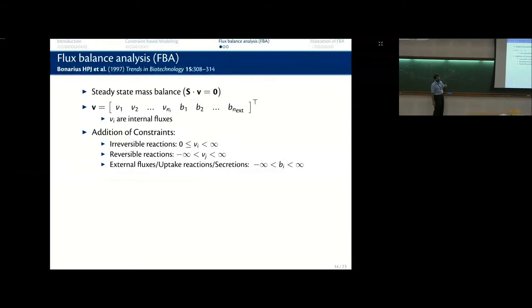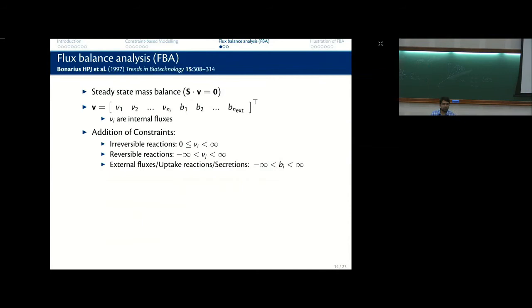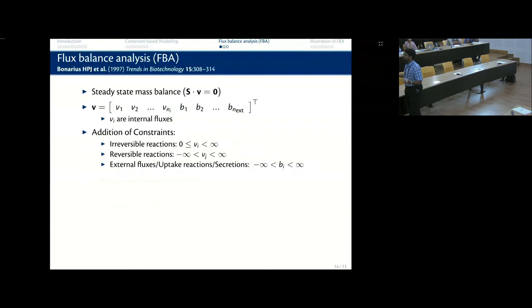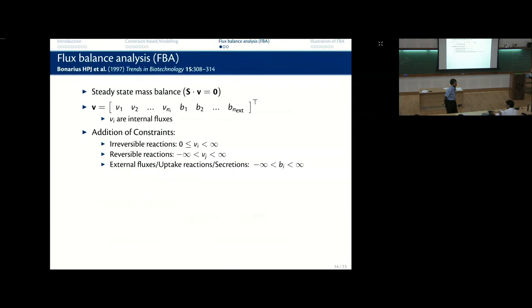How do you eliminate solutions? You start putting constraints. But since it's still an infinite space, how do you pick one solution? You need to second-guess what the cell is trying to do. If you figure out the cellular objective, you might predict a set of rates aligned with it. It turns out that a very good cellular objective is to maximize growth — under certain conditions this gives a flux solution that very closely aligns with what is really happening within the cell.